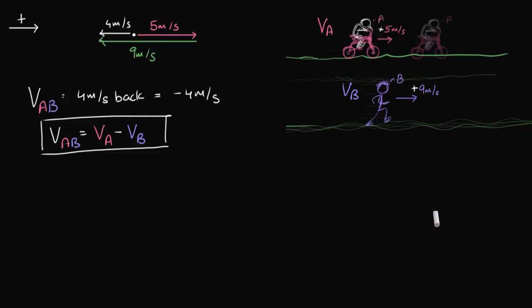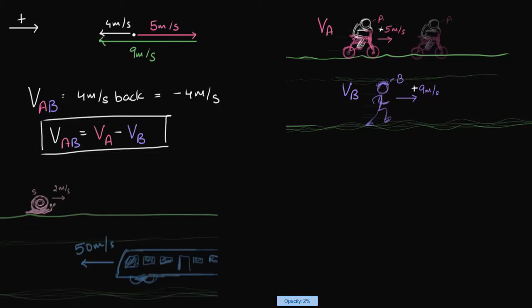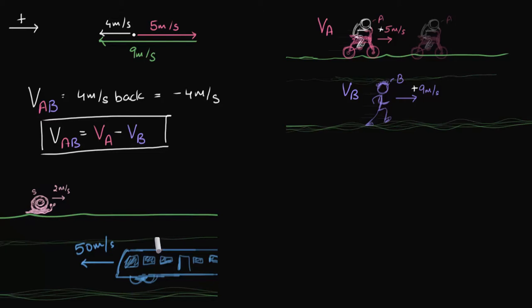We'll come back to this formula a little bit later. First, we'll take another example — situation number two. Over here we have a snail traveling towards the right and a train traveling towards the left. We're going to find the velocity of the snail with respect to the train. I want you to pause the video and try to figure this out yourself using the same exercise we did — just do this logically without looking at the signs.